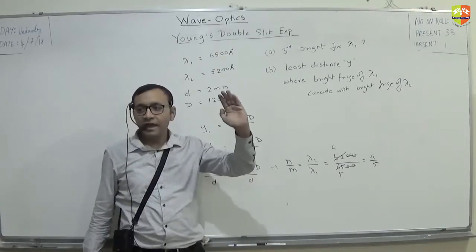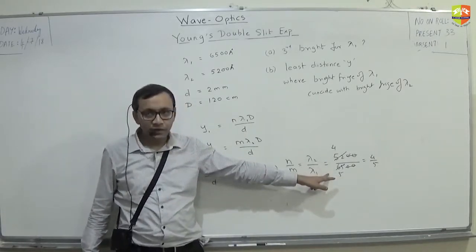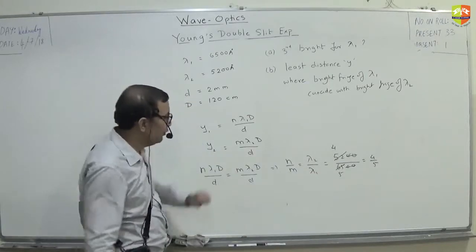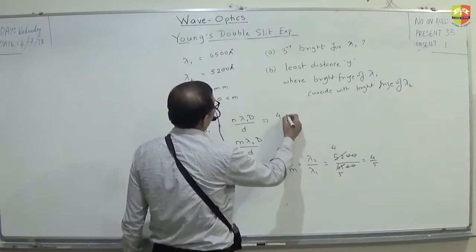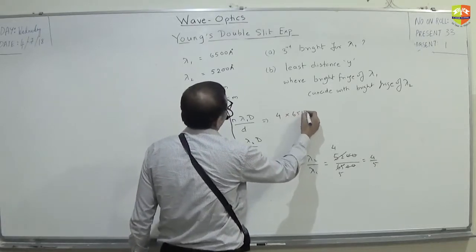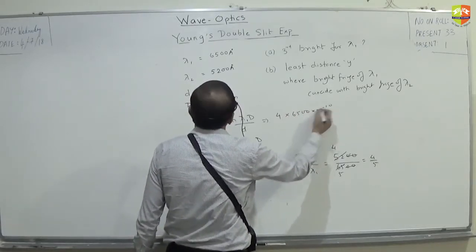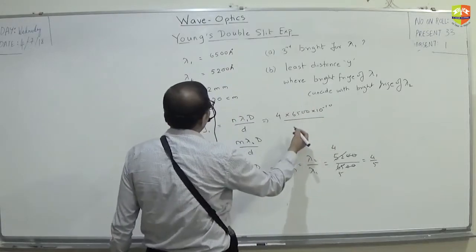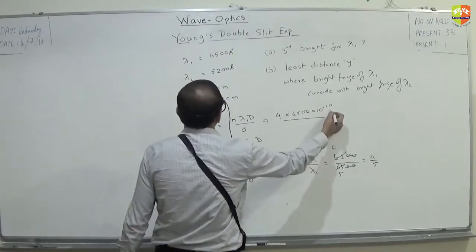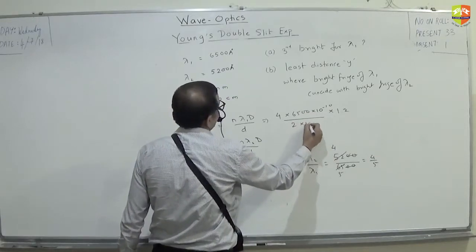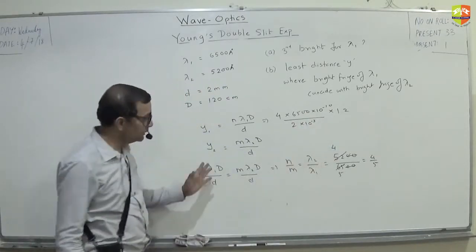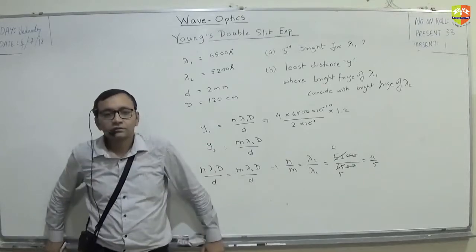For minimum y, I need to find minimum integer for this ratio. Are you getting it? So, n is 4 and m is 5. So, put n is equal to 4 over here. 4, lambda 1, 6500 divided by small d. Right? Capital D over here. 1.2 divided by 2 mm, 2 in terms of meter. Why are you not doing this?